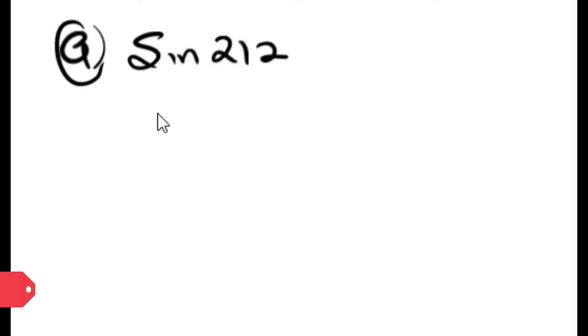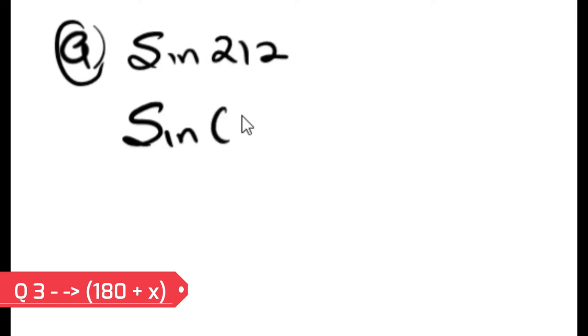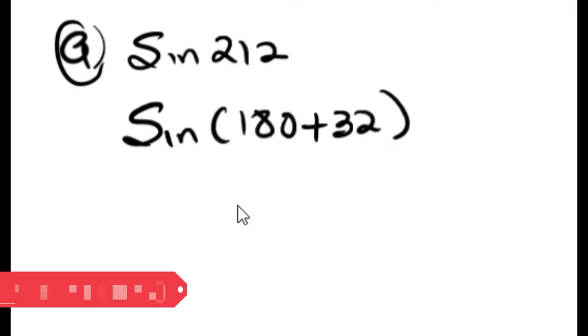To answer this question we need to use the concept of reduction. 212° is in the third quadrant. We need to rewrite 212° as 180° + 32°, and therefore we reduce it. Sine is negative in the third quadrant.